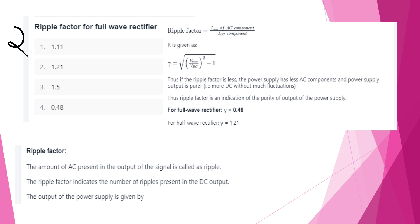The next question is: what is the ripple factor for a full-wave rectifier? The ripple factor measures the amount of AC component present in the output signal. The formula is: ripple factor = I_rms(AC component) / I_DC.